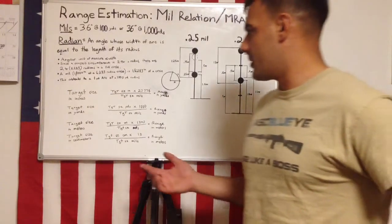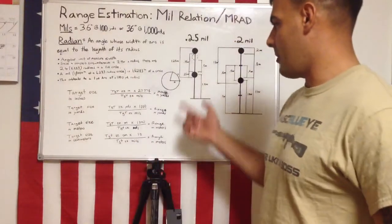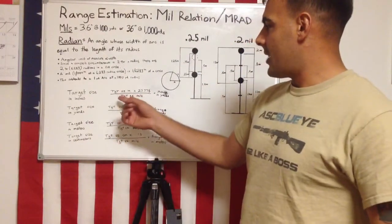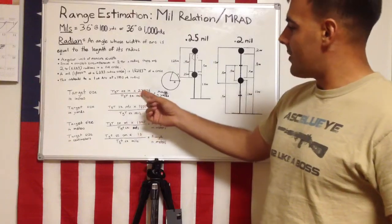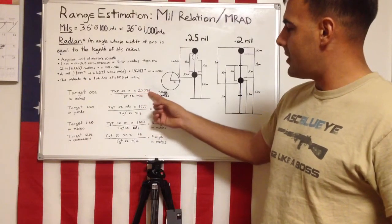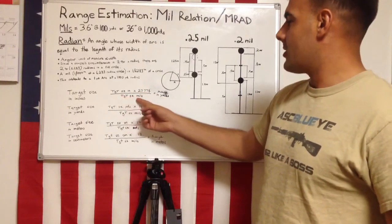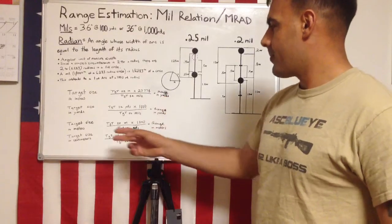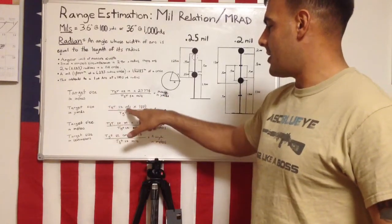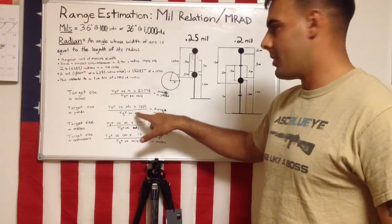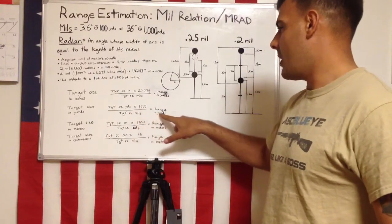So the formulas, there's a few different ones. They'll give me range in yards and range of meters. The target size in inches times 27.778, which is our constant, divided by the target size in mills, range in yards. Now if I take the target size in yards, times that by 1,000, divided by the size in mills, range in yards.